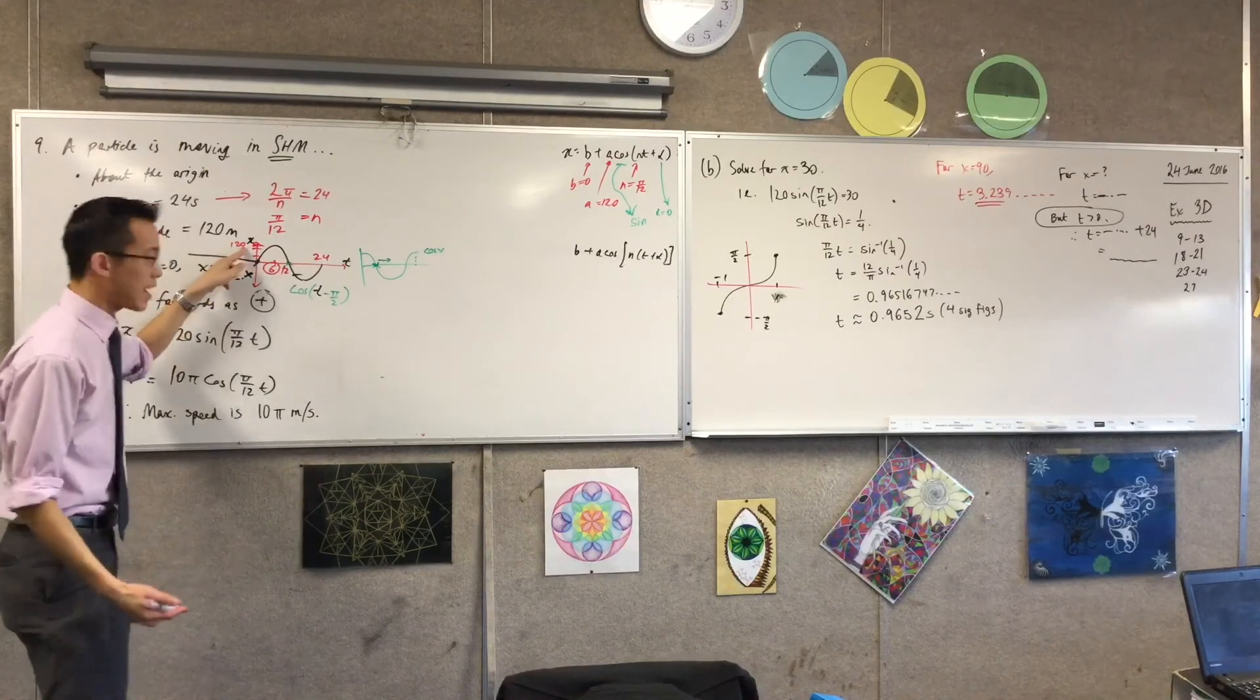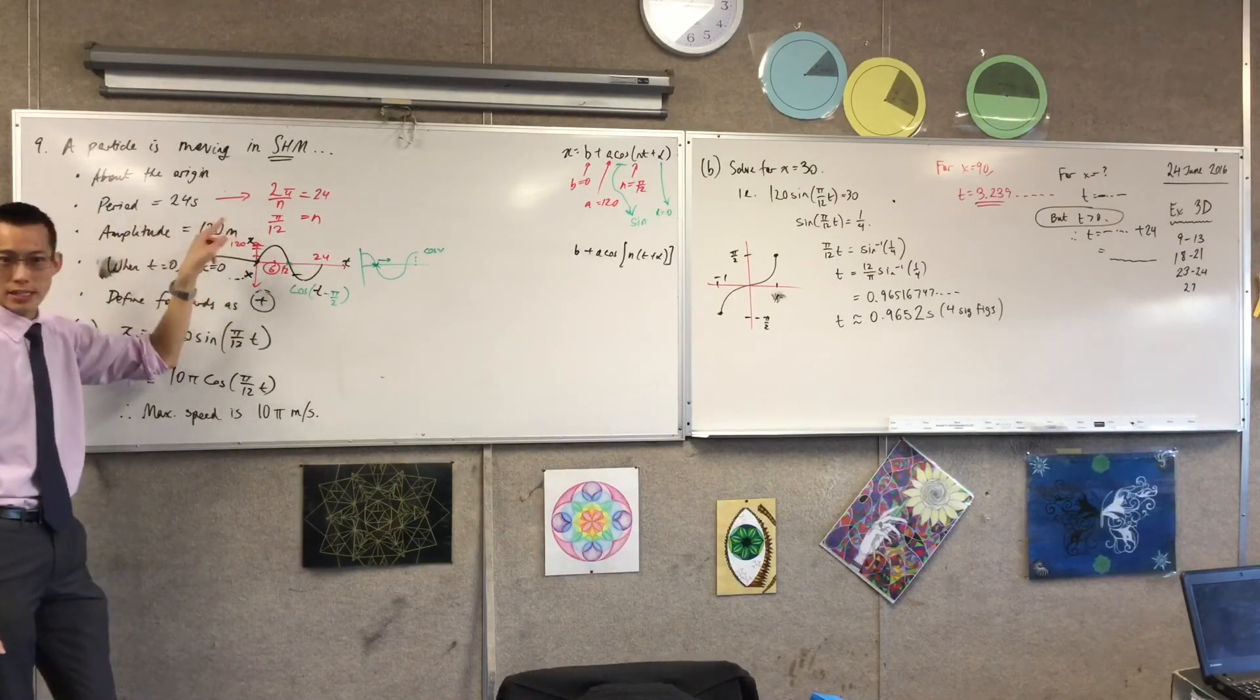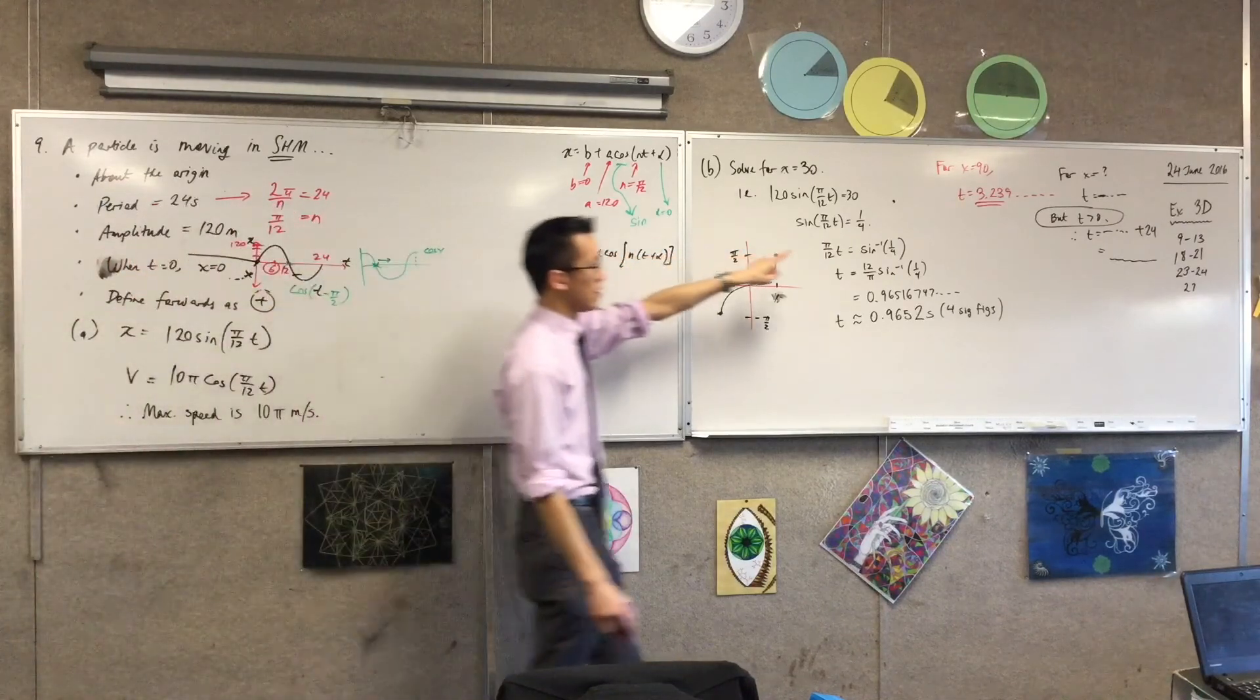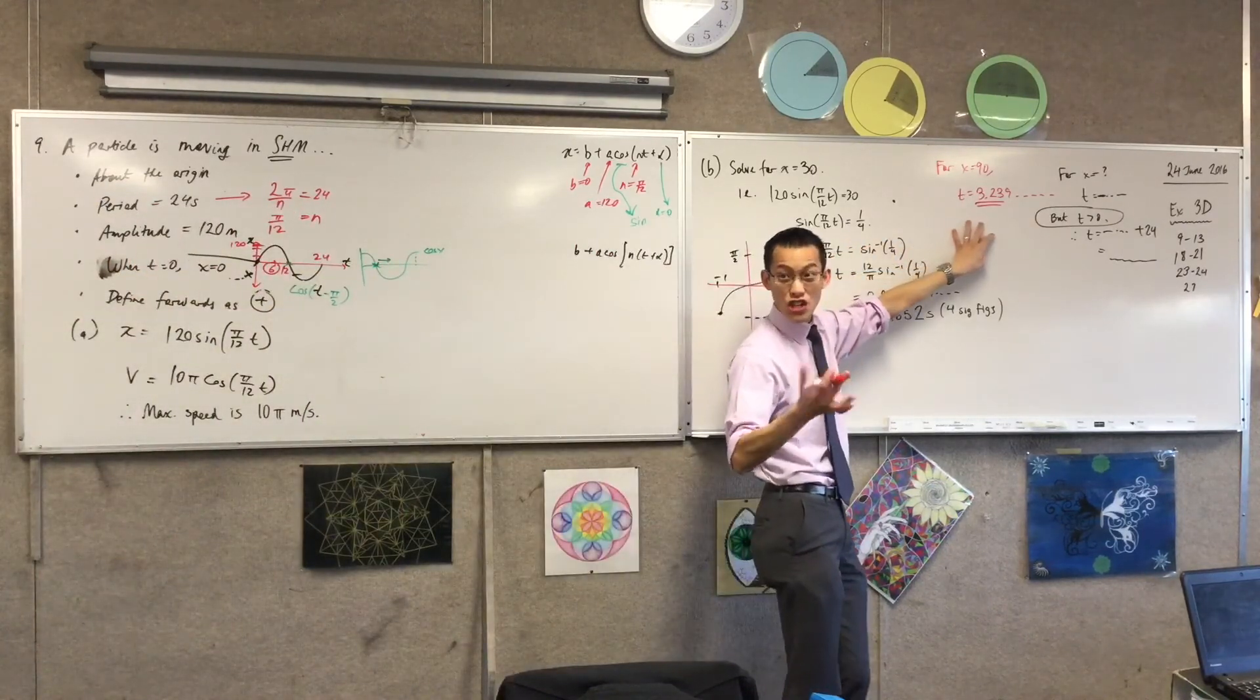Okay, so the time it takes to get to 90 is 3.2 seconds. So therefore, how long does it take me to get from 90 to 120? 6.8. 6 minus that, right? 6 minus that? 2.8. 2.8-ish seconds?